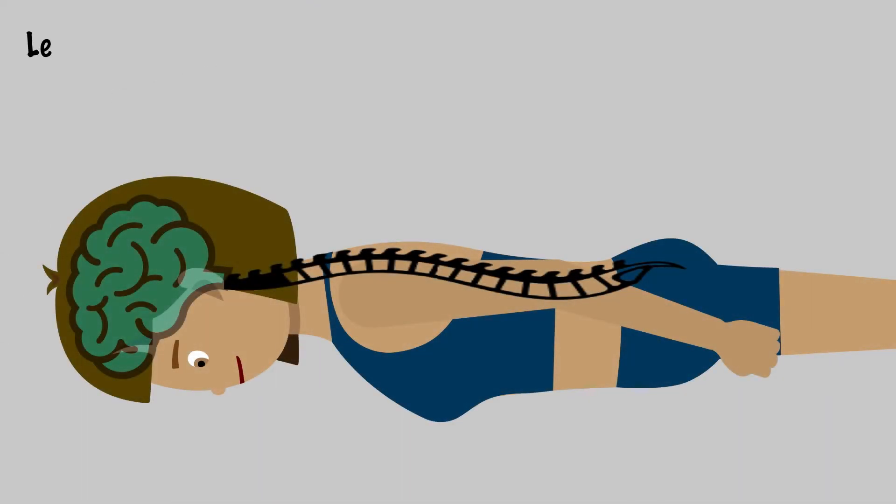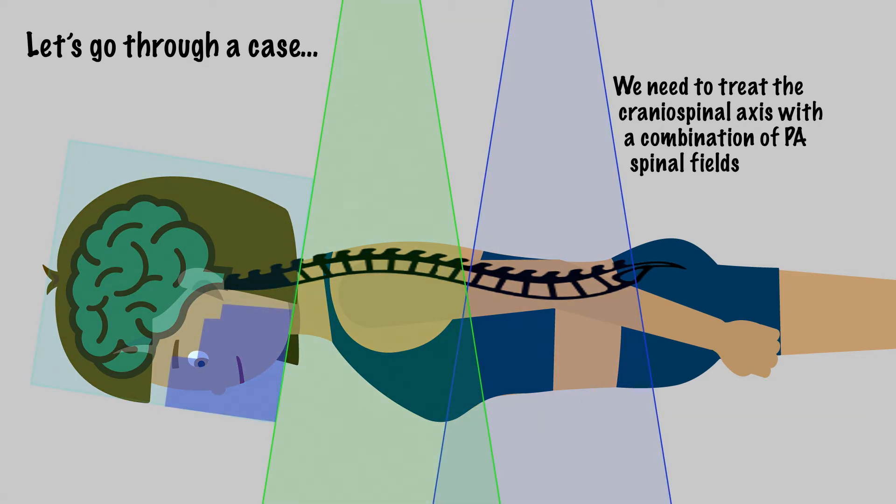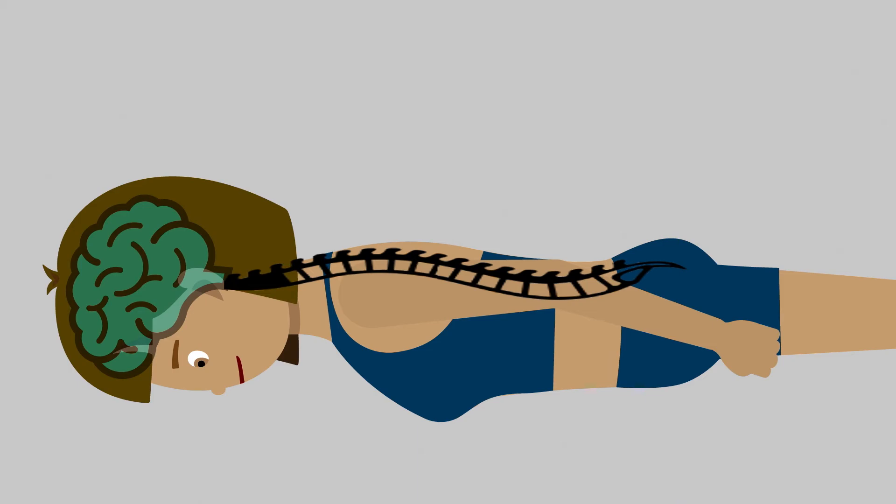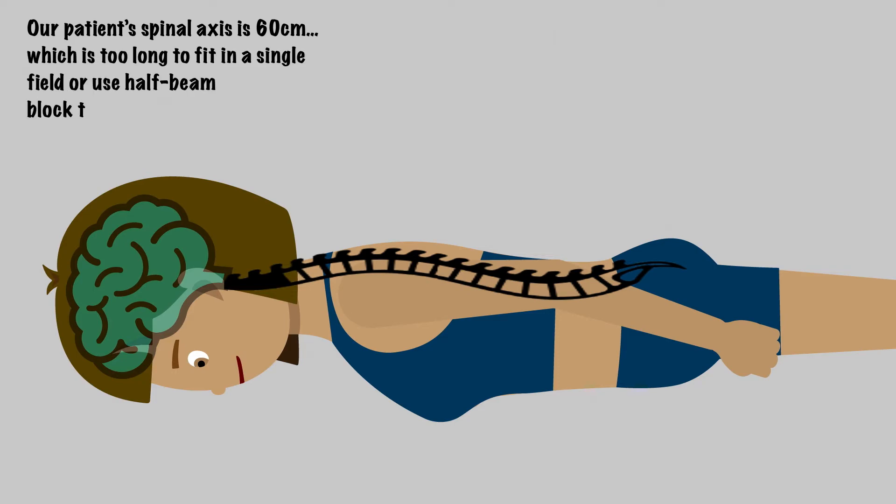Now we will go through an example of how field matching may come up in practice with a craniospinal irradiation case. Here, the goal is to treat the whole craniospinal axis of the patient, which is accomplished with a combination of PA spinal fields set up with SSD, and two opposed lateral whole brain fields set up SAD. We will start with the spine treatment. For this patient, the spinal axis measures 60 cm, which is too long to fit in a single field or to use a half-beam blocked technique.